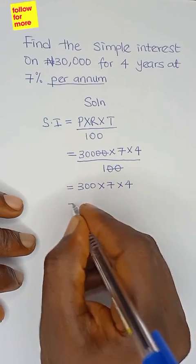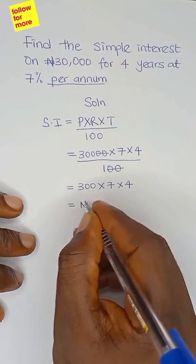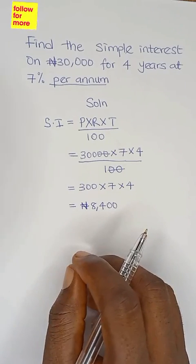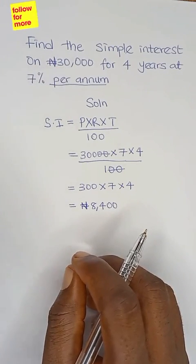2,100 multiplied by 4 gives us 8,400. So our answer is ₦8,400.